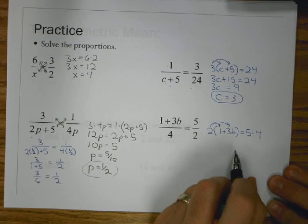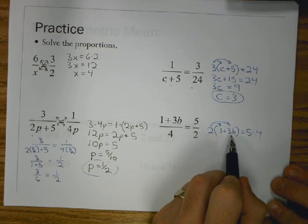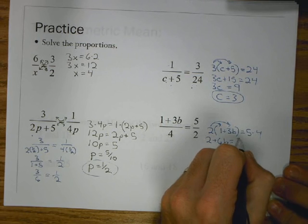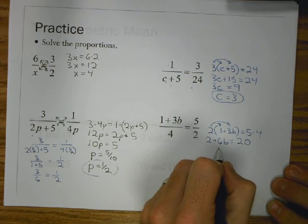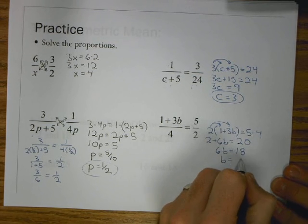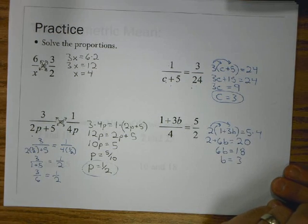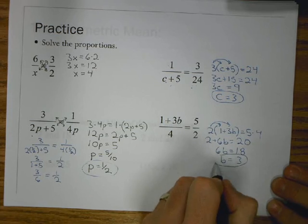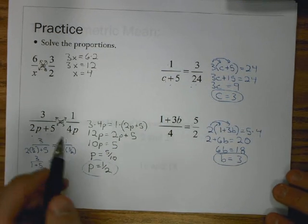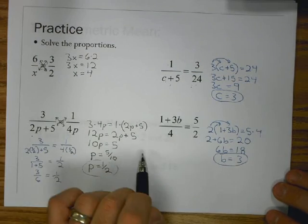Last one. Cross product. 2 times 1 plus 3B equals 5 times 4. Distribute again. Be careful. Students seem to forget that second term a lot to multiply it. So, it's 2 plus 6B equals 20. If I subtract 2 from both sides, I get 6B equals 18, and B equals 3.